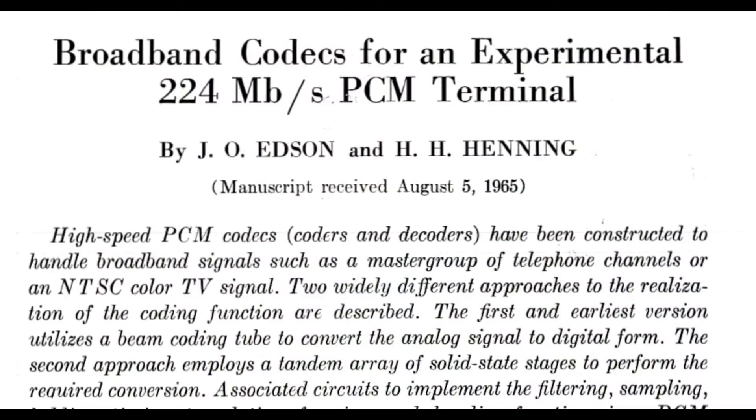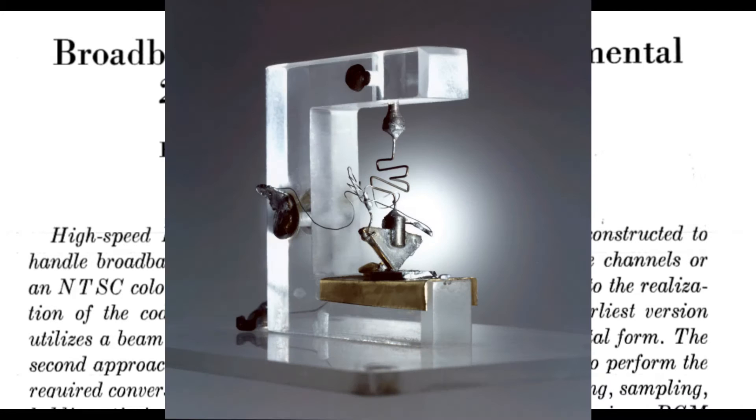But AT&T was beginning experiments with high-speed digital networking. The goal was to develop equipment for a digital toll-grade long-haul system capable of transmitting television and frequency division multiplexed 600-channel telephone master groups. In order to do this, Bell Telephone Labs embarked on the development of an experimental 224 megabit per second analog-to-digital converter.